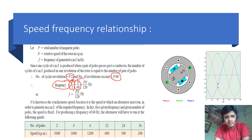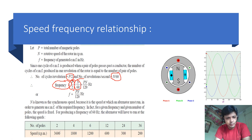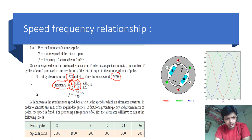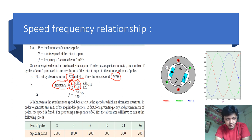This is the relationship between speed and frequency. When the number of poles is 2 and frequency is 50 Hz, then the speed will be 3000 RPM, which is the highest speed in India.